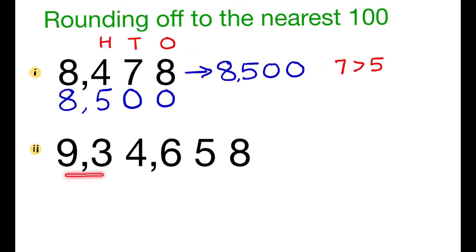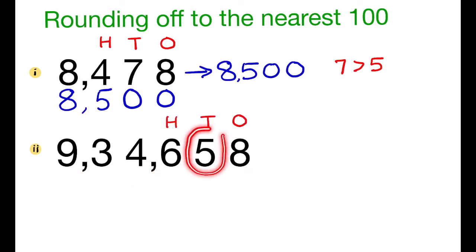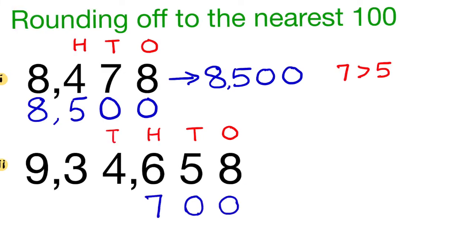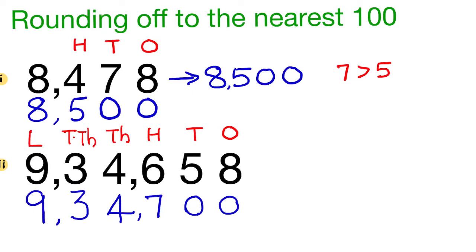Next number: 934,658. The digit in the tens place is 5. So, we add 1 to the digit in the hundreds place. 6 plus 1 is 7. We write 0 in the ones and tens place, 4 in the thousands place, 3 in the ten-thousands place, and 9 in the lakhs place. So, 934,658 is rounded off to 934,700.